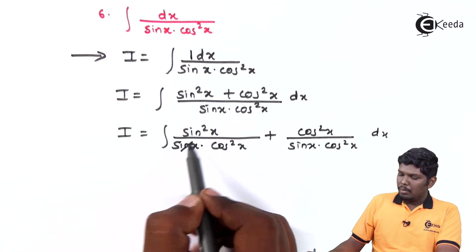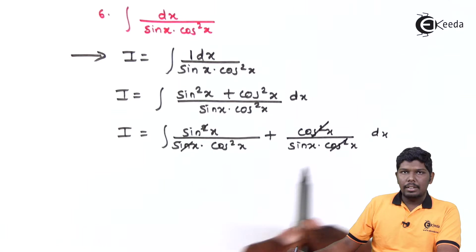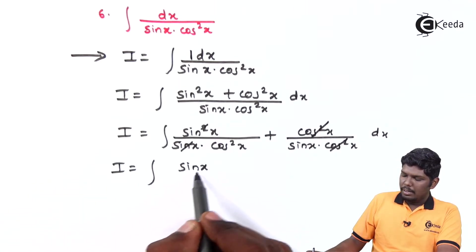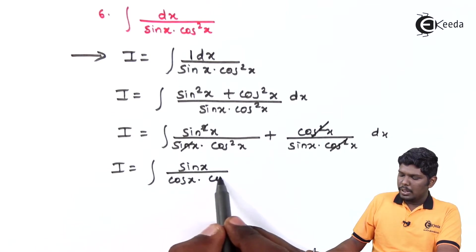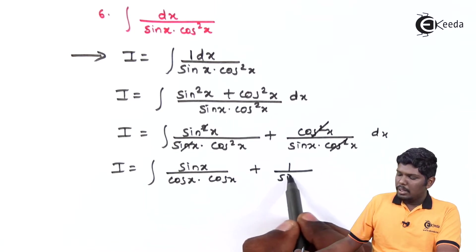From the first part, one sin will be cancelled and from the second part cos square x will be cancelled. This will give you sin x upon cos square x, which can be written as cos x into cos x, plus here we have 1 upon sin x.